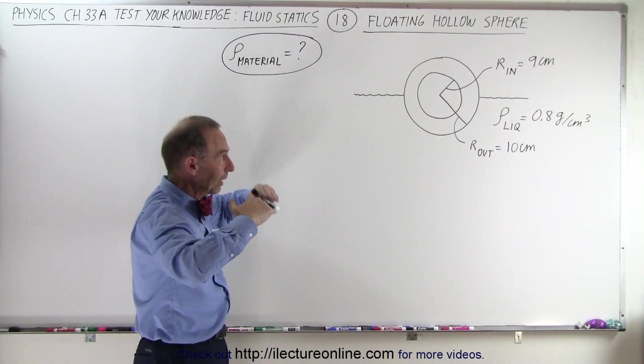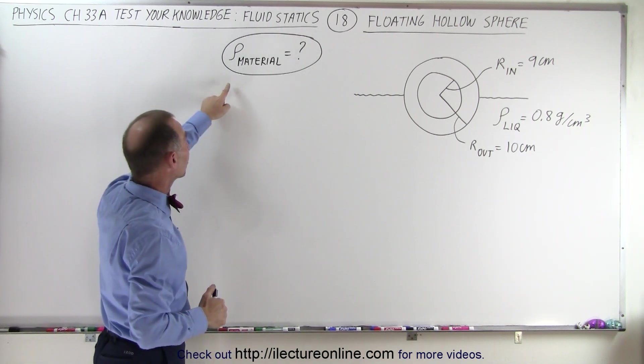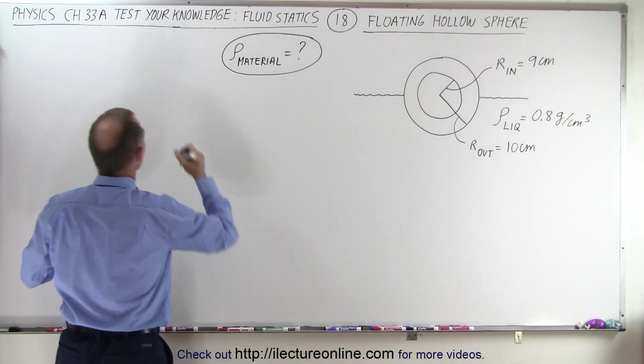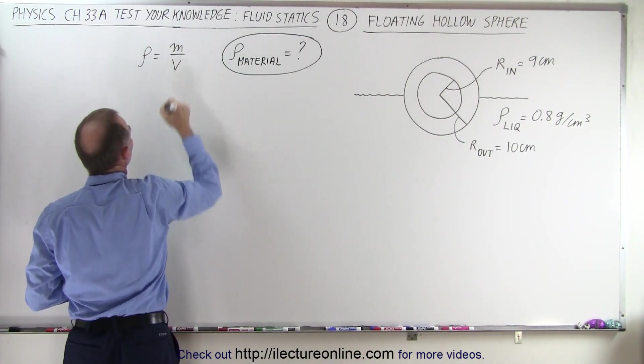The water or the liquid comes up to the halfway point of the sphere, and they're asking us to find the density of the material. Remember that the density of the material can be found by taking the mass divided by the volume.